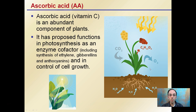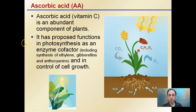Vitamin C is an abundant component of plants and its proposed functions in post-synthesis include acting as an enzyme cofactor, the synthesis of ethylene, gibberellins, and anthocyanins, and also in the control of cell growth. So it can have more than just the post-synthetic process — it can also potentially control and regulate cell growth in plants.